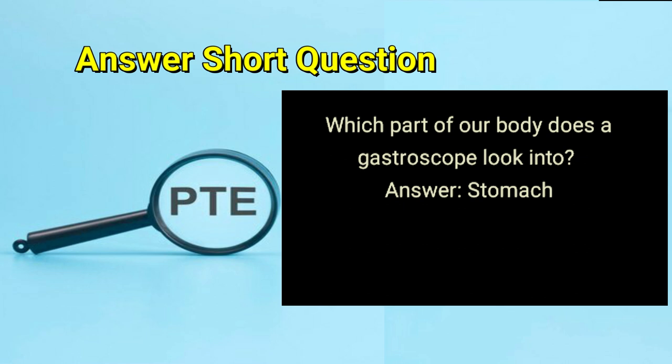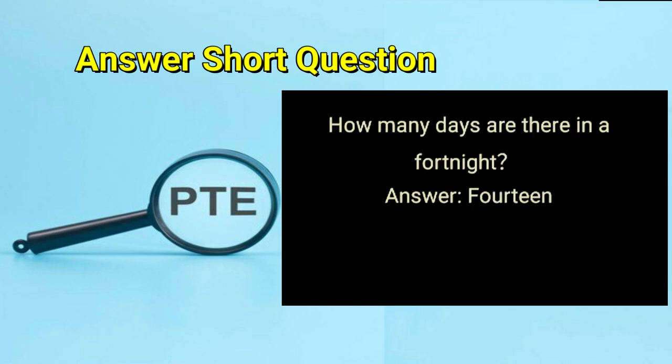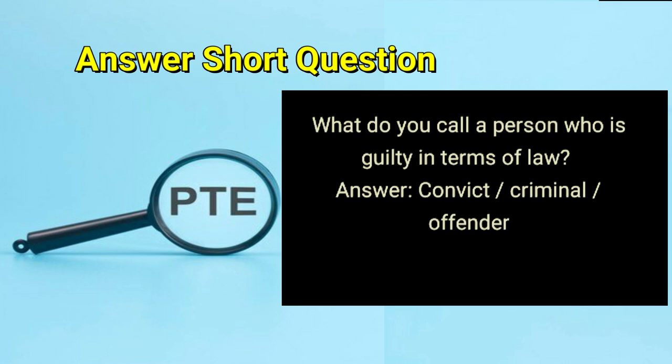Which part of our body does a gastroscope look into? Answer: stomach. How many days are there in a fortnight? Answer: 14. What do you call a person who is guilty in terms of law? Answer: convict, or criminal, or offender.